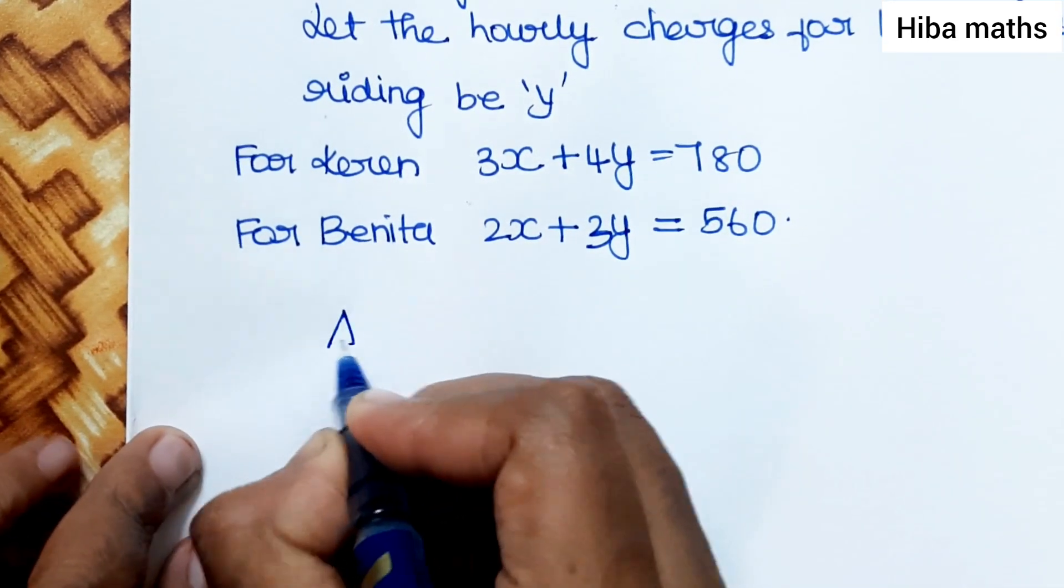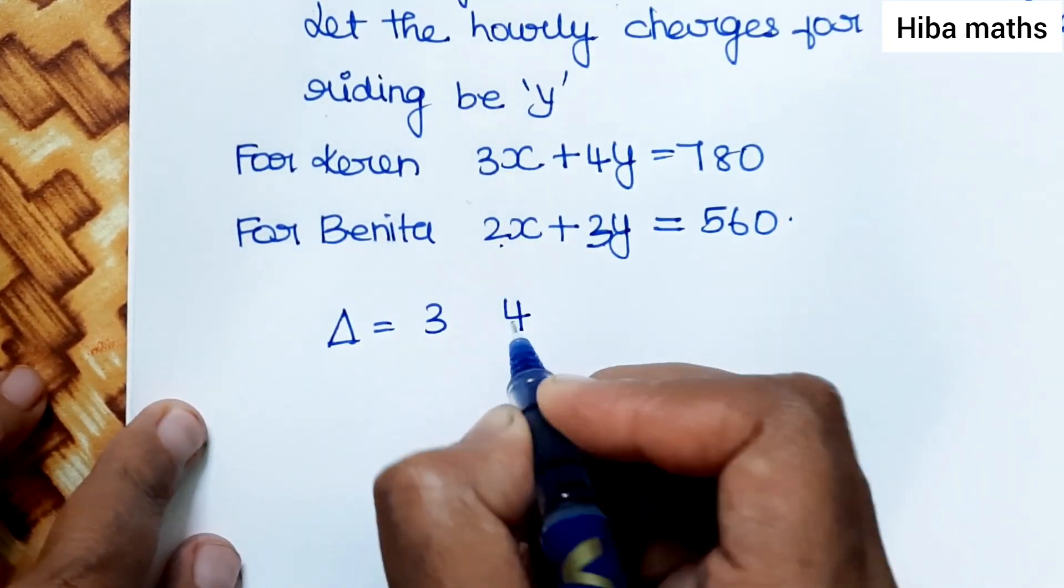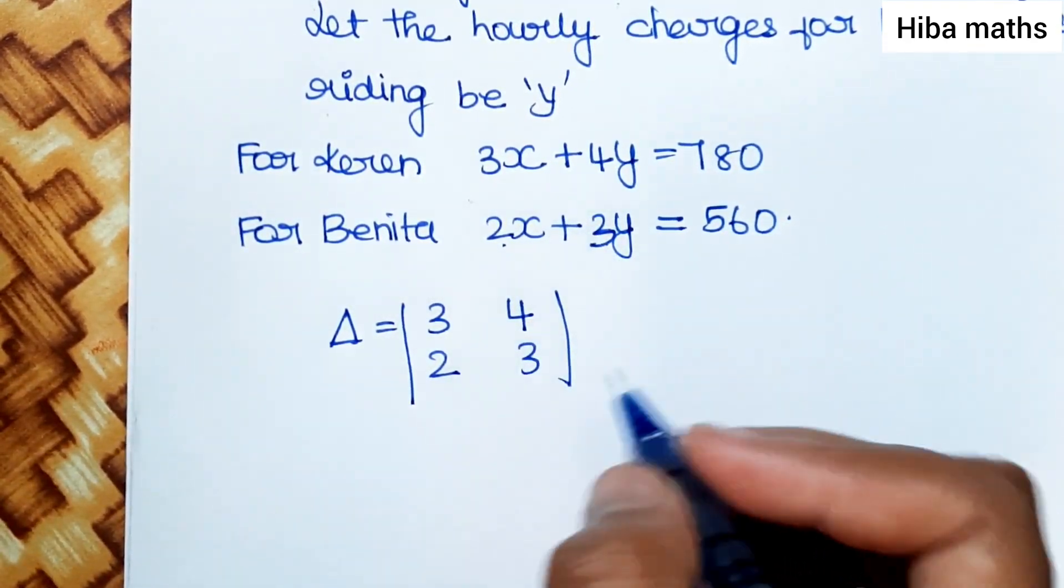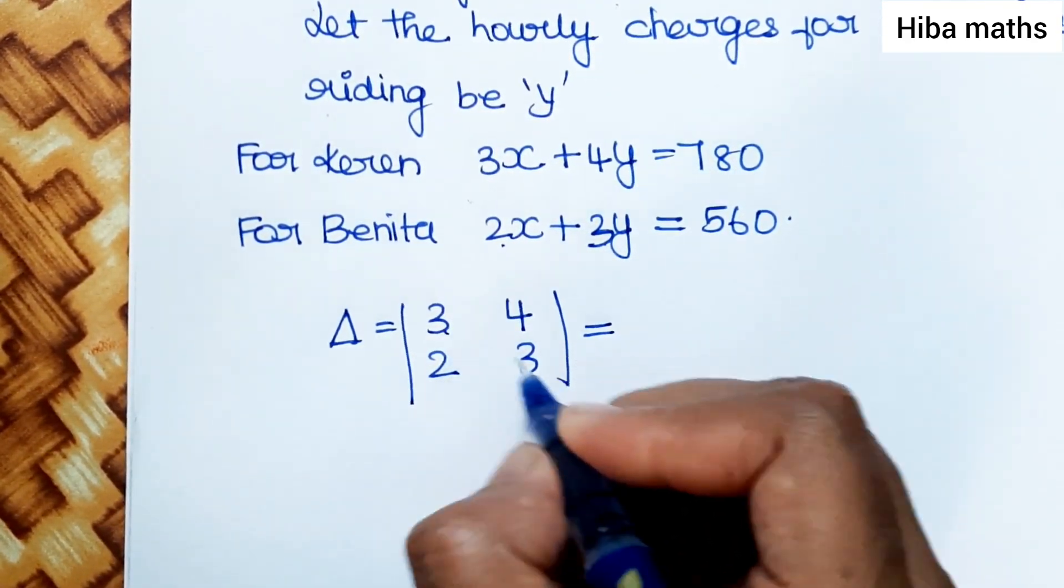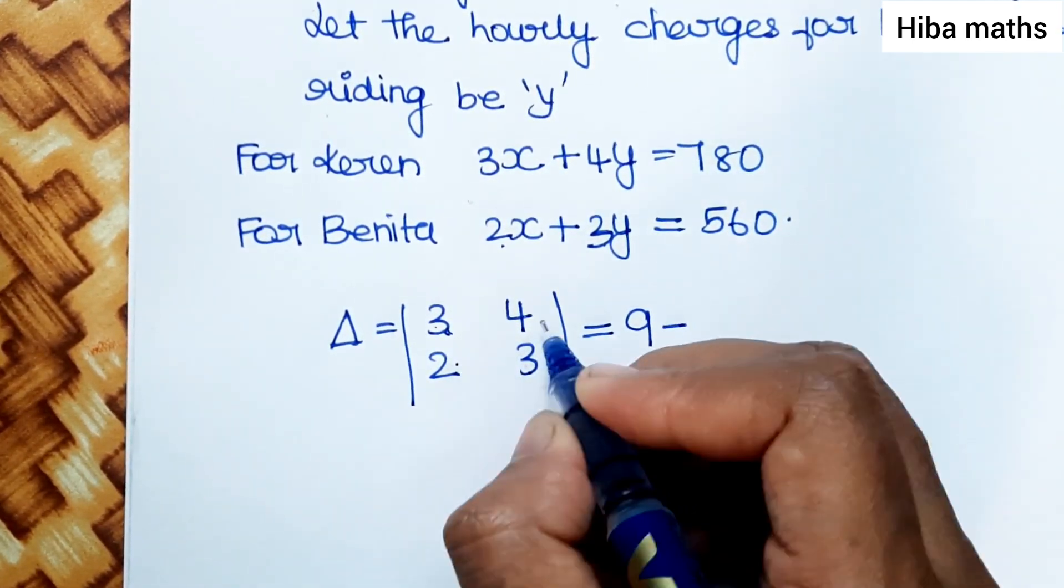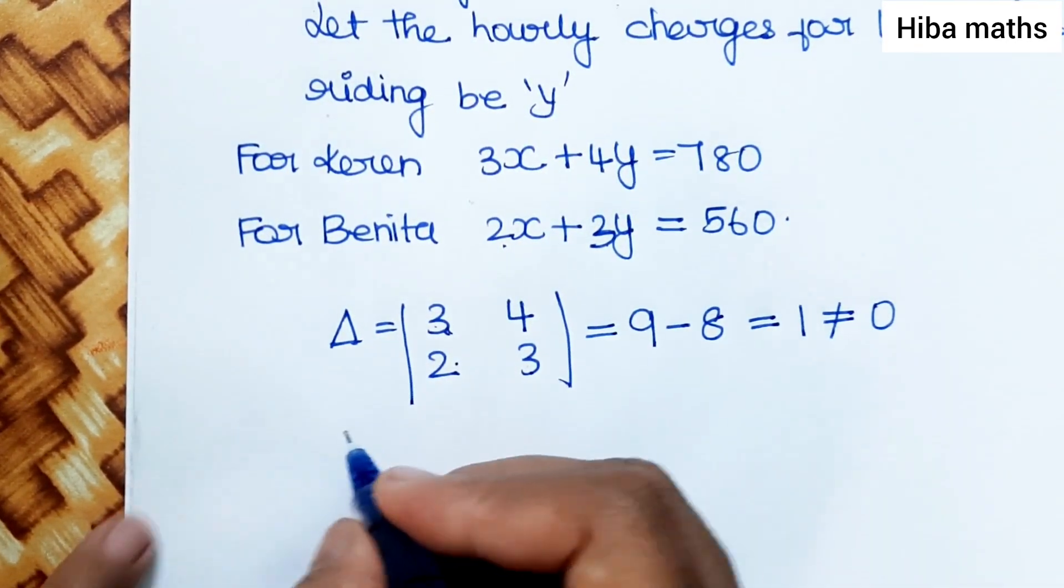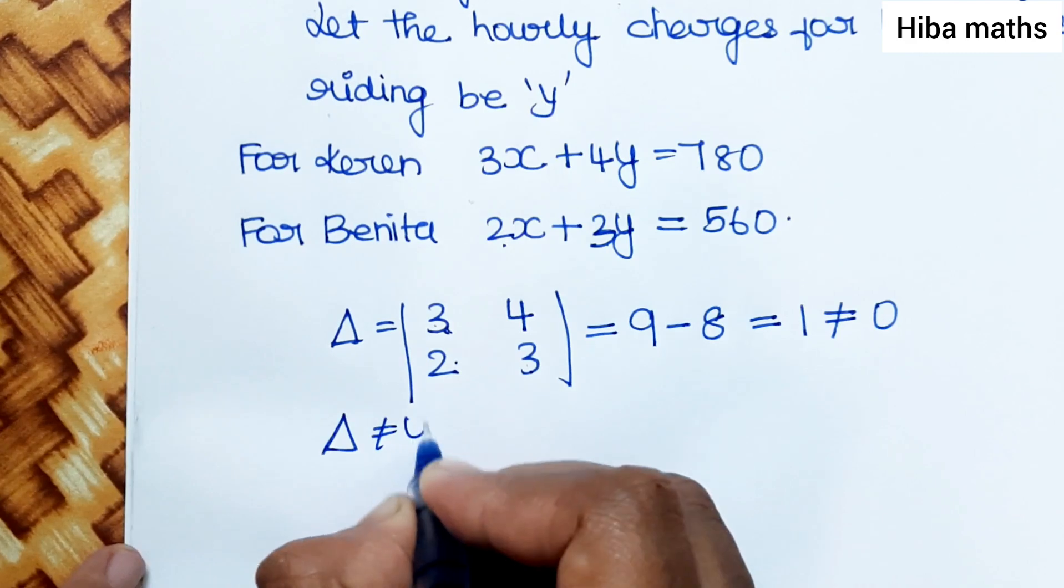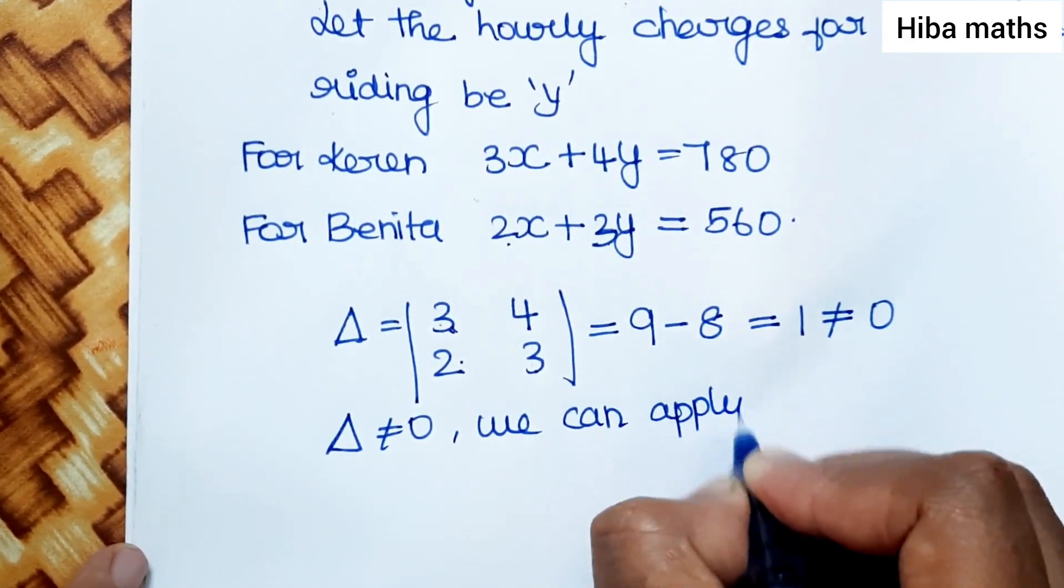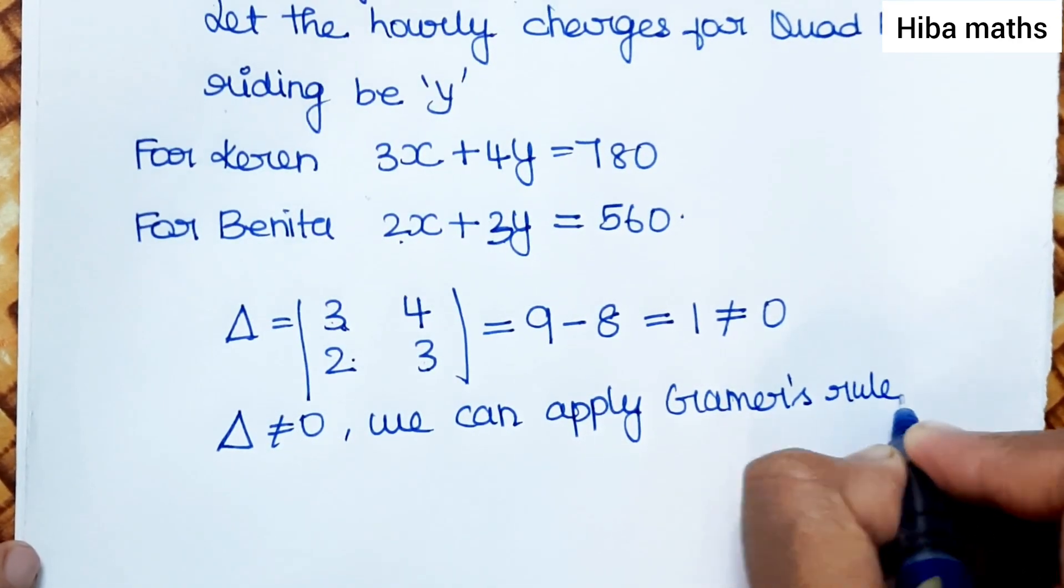The coefficient matrix is [3, 4; 2, 3]. Computing the determinant: del equals 9 minus 8 equals 1, which is not equal to 0. Therefore we can apply Cramer's rule.